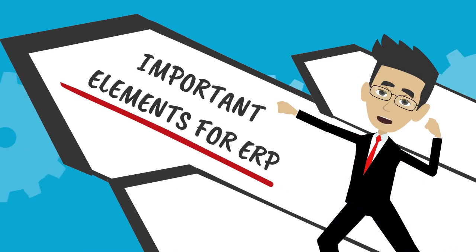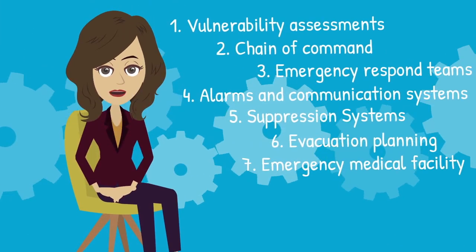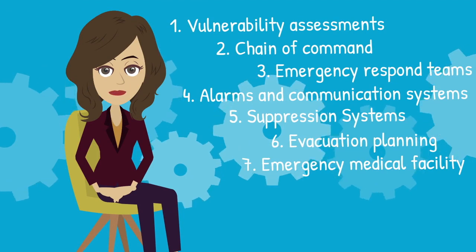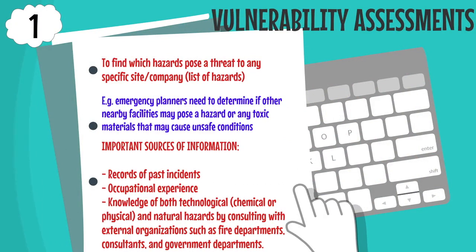There are seven important elements of an emergency response plan. The first element is vulnerability assessment. This is important to find which hazards pose a threat to any specific site or company. During this assessment, several sources of information are needed, such as records of past incidents, occupational experience, and knowledge of both technological and natural hazards, by consulting with external organizations such as fire departments, consultants, and government departments.